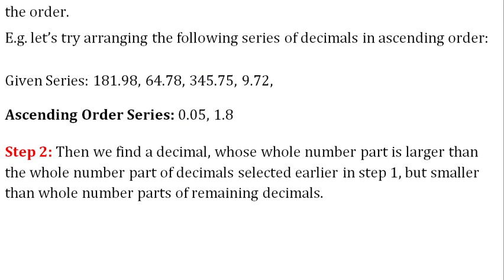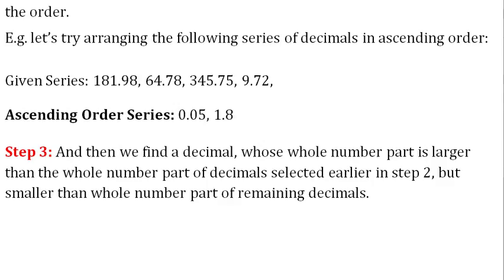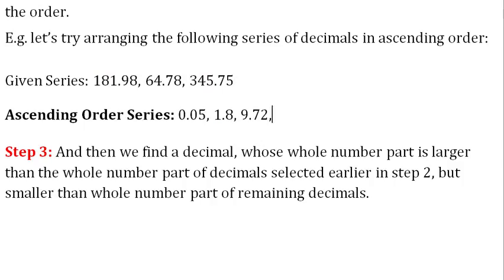Step 3: We find a decimal whose whole number part is larger than the whole number part of the decimals selected earlier in Step 2, but smaller than the whole number part of the remaining decimals. We get 9 as the whole number part of decimal 9.72. It is larger than 1 (the whole number part of 1.8) but smaller than the whole number part of the remaining decimals. So 9.72 is written next, giving series: 0.05, 1.8, 9.72.